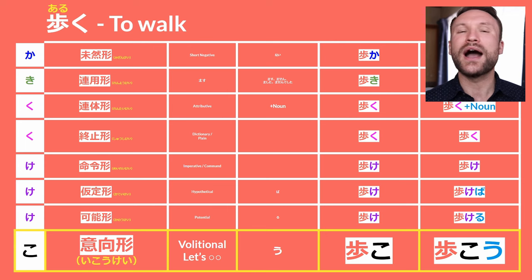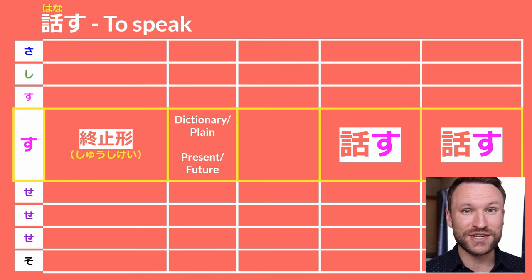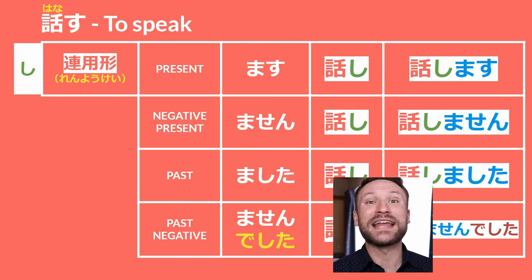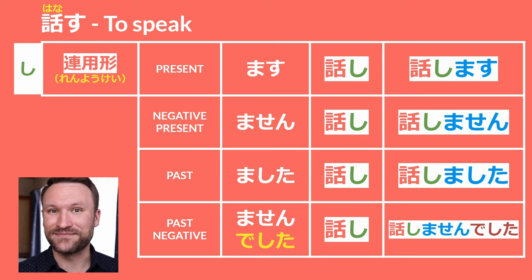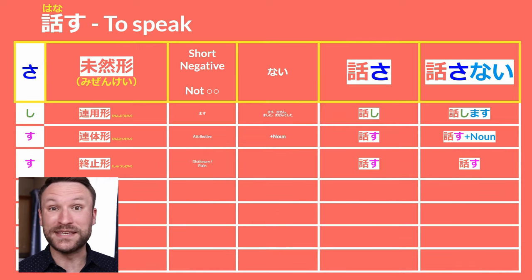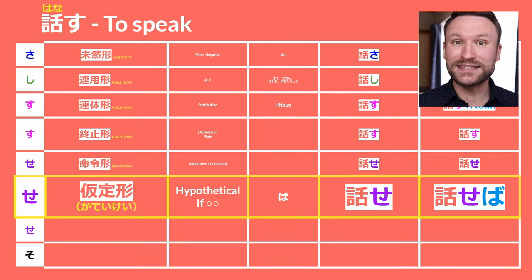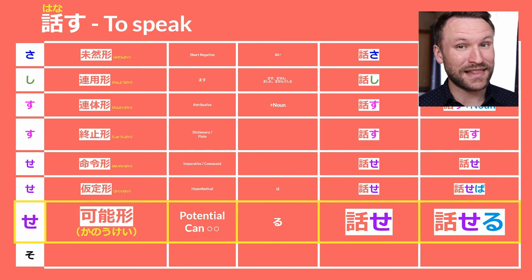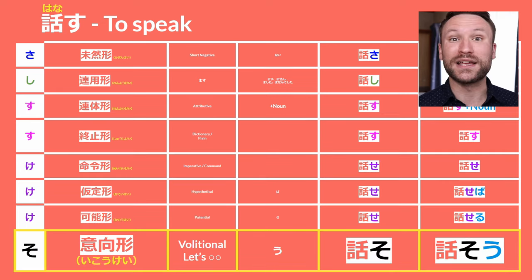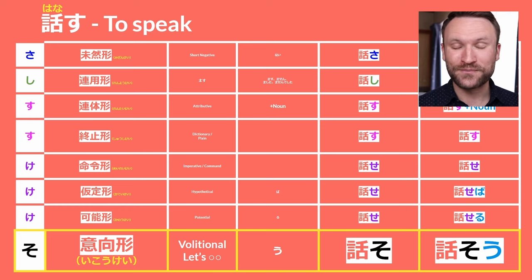Let's do this with another verb: hanasu, which means 'to speak.' Moving up to renyoukei: hanashimasu, hanashimasen, hanashimashita, hanashimasen deshita. Moving up to mizenke: hanasanai — 'not speak.' Moving down to meireikei: hanase — 'speak.' Moving to kateikei: hanaseba — 'if speak.' Moving to kanoukei: hanaseru — 'can speak.' Moving down to the O column for ikoukei: hanasou — 'let's speak.'